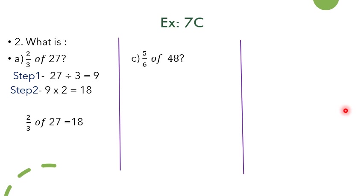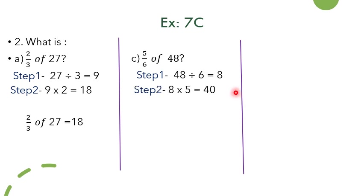The next question is bit number c: what is 5 by 6 of 48? Step 1 is to divide 48 by 6 — dividing the number by the denominator. Since 6 eights are 48, the quotient is 8. In step 2, 8 is multiplied with the numerator: 8 fives are 40. So first we use the denominator and then the numerator. The final answer is 40 — 5 by 6 of 48 is 40.